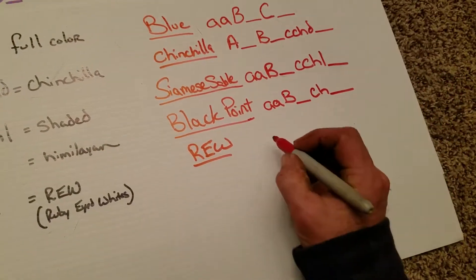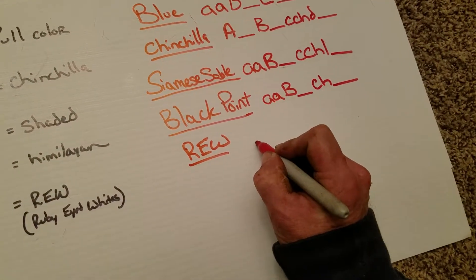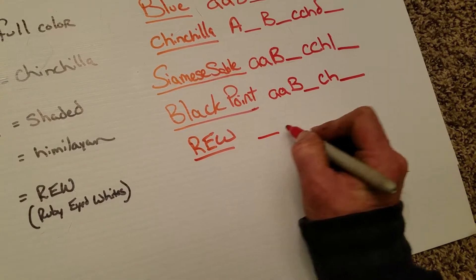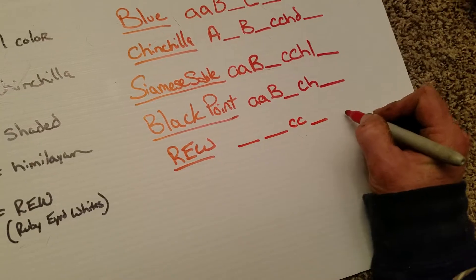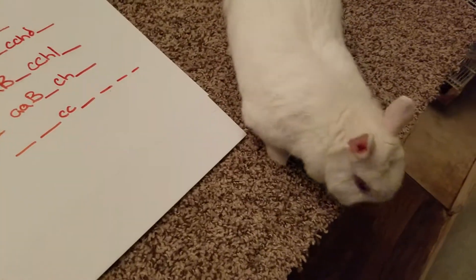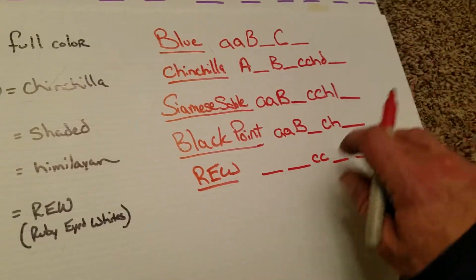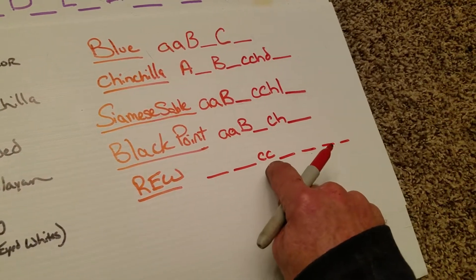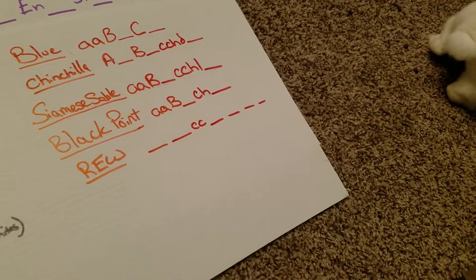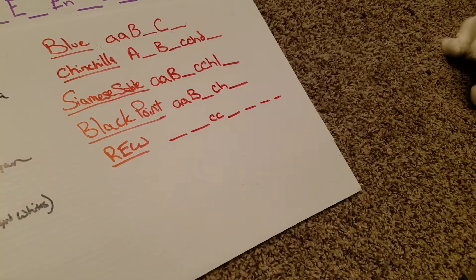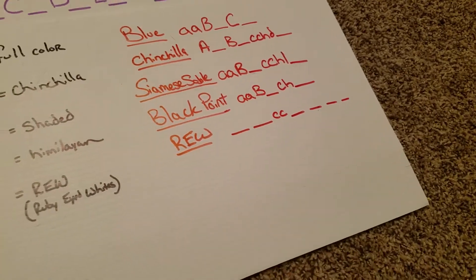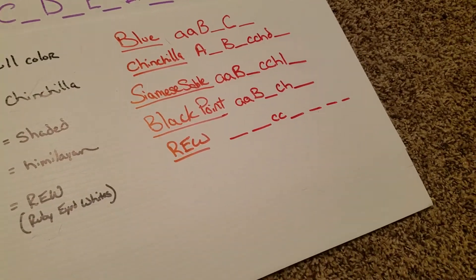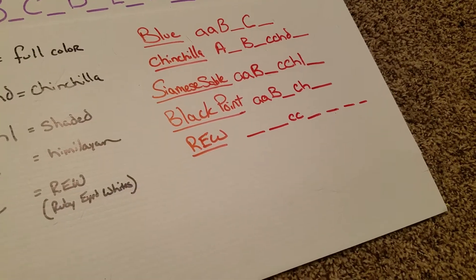So the way we would write her genetic string is we would just write a dash, dash, c, c, and then of course everything else is a dash. The whole string is a dash. The only thing that we know for certain about her is that she contains two copies of ruby-eyed white, and that's the way we get ruby-eyed white to present. In the next segment, we're going to talk about a couple of things about this locus point, including ruby-eyed whites, that you need to consider, and we'll do that in part three.